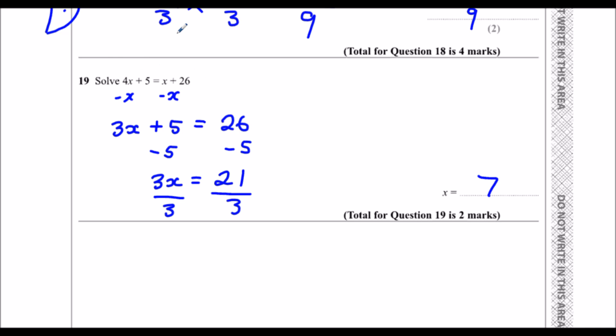If you want, you can check that by substituting it back into the top. So 4 times 7 is 28, plus 5 equals 33. x is 7 plus 26, that's also 33. So we know we've got it right.